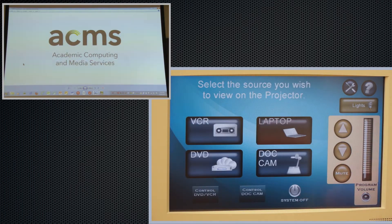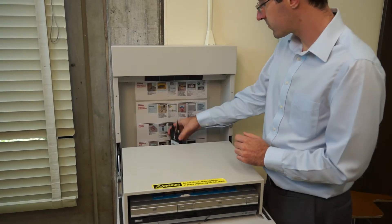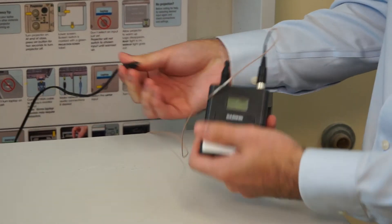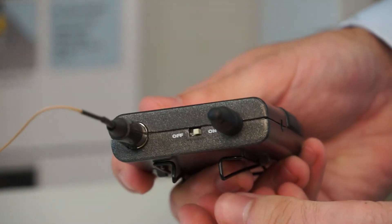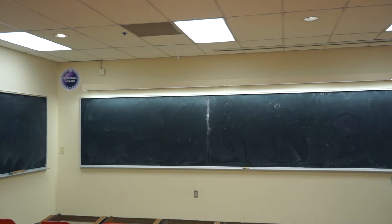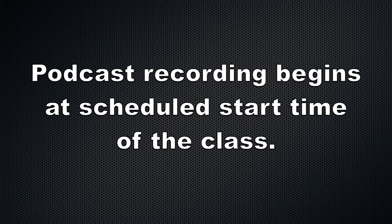Tap the Return button when finished. A wireless microphone can be found in many podcast-capable classrooms. A charging station with rechargeable batteries is provided. Remember to turn on the microphone before use and to turn it off at the end of lecture. The microphone is only for podcasting and will not broadcast through the classroom speakers. Podcast-capable classrooms without wireless microphones have microphones installed in the ceiling. If you have requested podcasting for your class, it will begin recording automatically at the scheduled start time of the class.